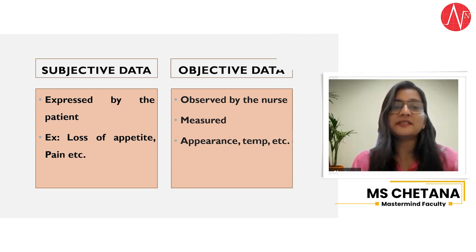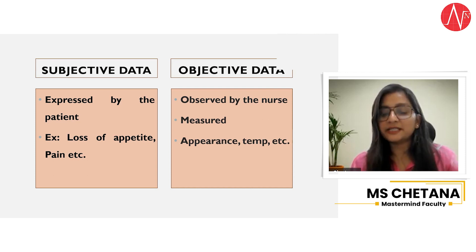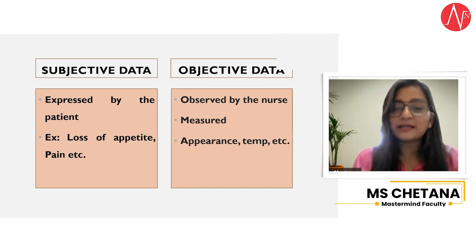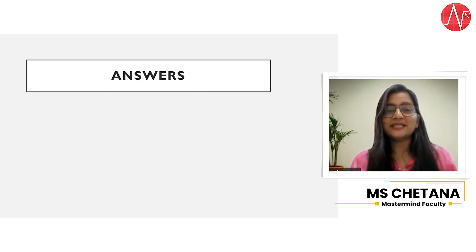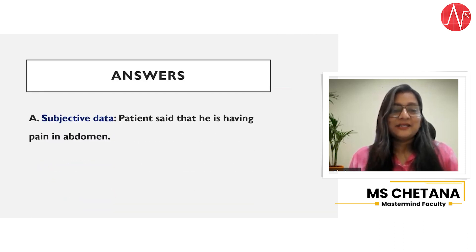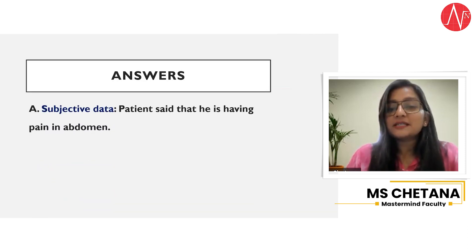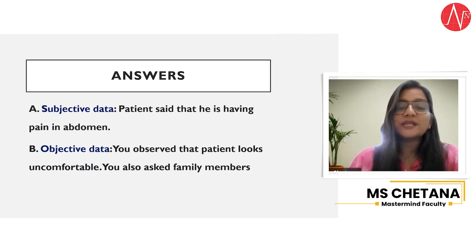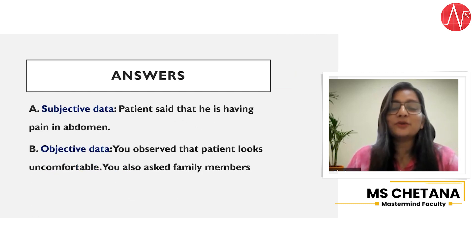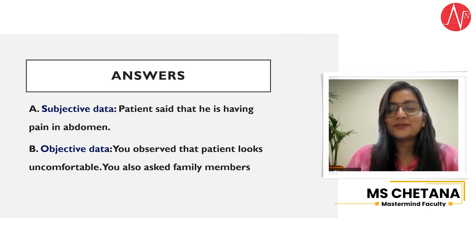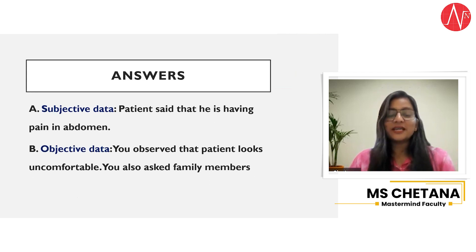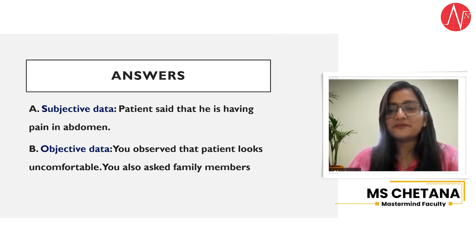So this is the difference between subjective and objective data. Subjective data is: the patient said that he is having pain in the abdomen. Objective data is: you observed that the patient looked uncomfortable. Thanks for watching and keep watching for such informative videos. Thank you.